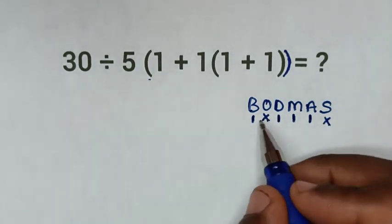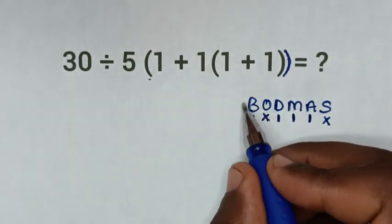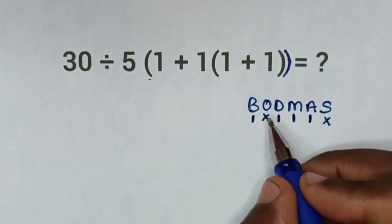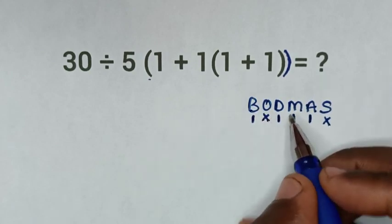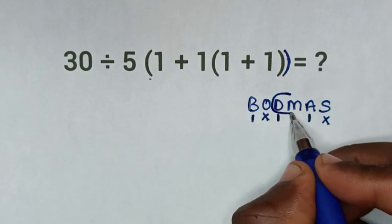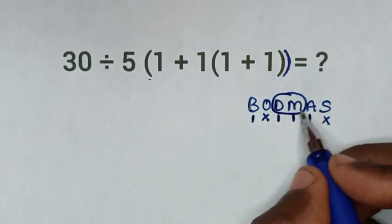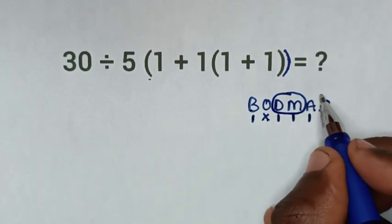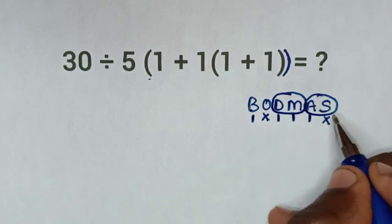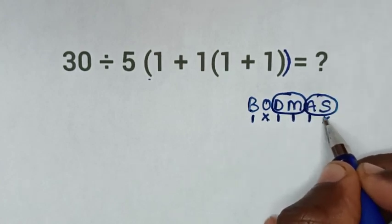From this rule, we'll deal first with brackets because we have brackets. We don't have order, then we'll deal with division and multiplication. After we have dealt with those, then we'll deal with addition and subtraction — but we don't have subtraction.